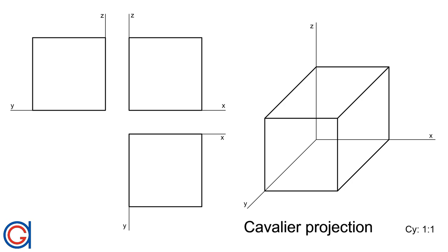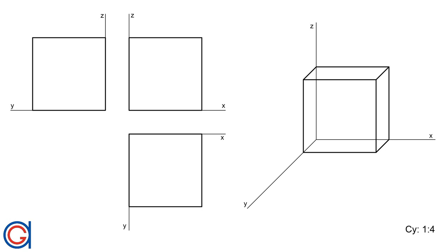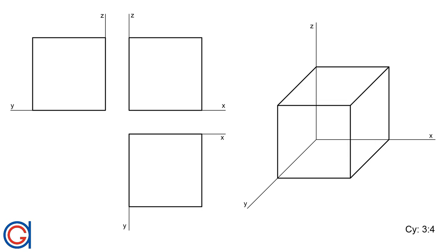In cavalier projection, the length of the three axes X, Y and Z are drawn with a 1 to 1 scale. Unlike cavalier projection where the Y axis keeps its length, with cabinet projection the length of the receding lines is typically reduced to a scale of 1 to 2. You can also use different scales such as 1 to 4 or 3 to 4 to form different kinds of oblique projections.